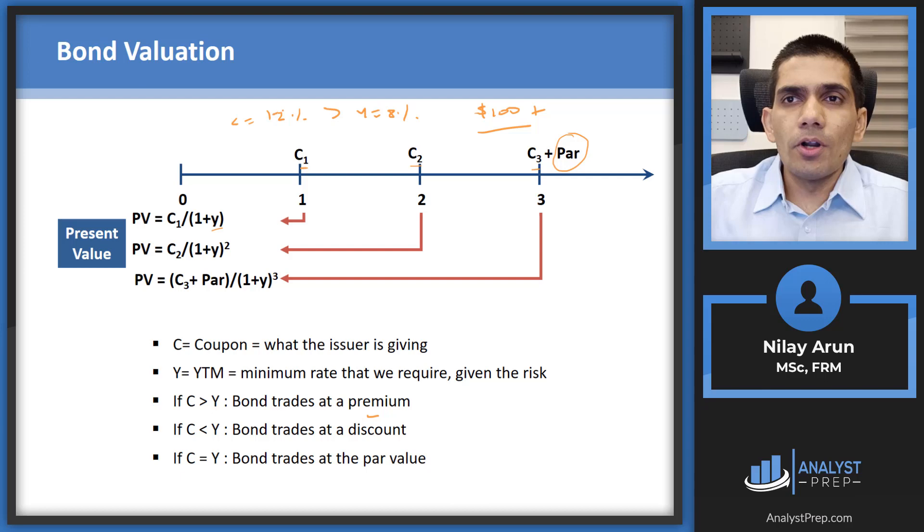Let's say if the coupon instead of being 12 was let's say 6%. That means now your coupon is less than the yield. So the minimum rate of return that you required was 8%, but the issuer is not compensating you sufficiently for the level of risk which you're taking. So they're only ready to give you 6%. So in this case, to make up for the lost return, what will you do? You're not going to pay $100 for this bond anymore. You'll ask for a discount on that bond. So let's say $90 or $95 or some other value like that.